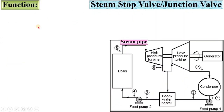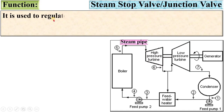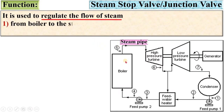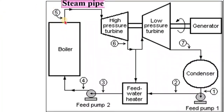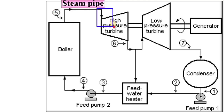The function of the steam stop valve is to regulate the flow of steam from the boiler to the steam pipe, or from the steam pipe to the engine or turbine. So basically there are two functions: first, to regulate the flow of steam from the boiler to the steam pipe, and second, to regulate the flow of steam from the steam pipe to the engine or turbine.